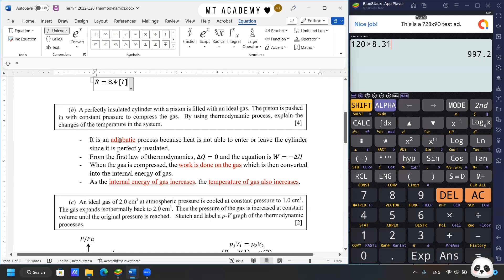Let's go through my sample answer. It is an adiabatic process because heat is not able to enter or leave the cylinder since it is perfectly insulated. From the first law of thermodynamics, ∆Q equals zero, and the equation is W equals negative ∆U. When the gas is compressed, work is done on the gas, which is converted into internal energy of gas. Since internal energy increases, the temperature of gas also increases. If you have different opinions, tell me in the comment section.